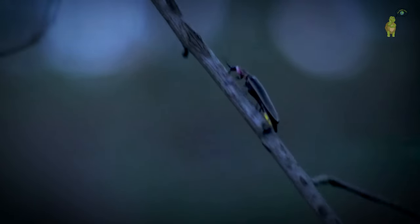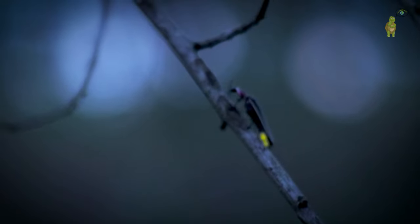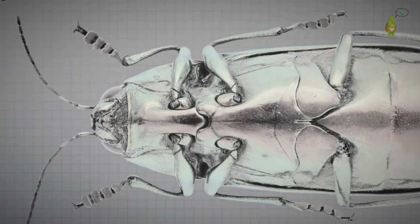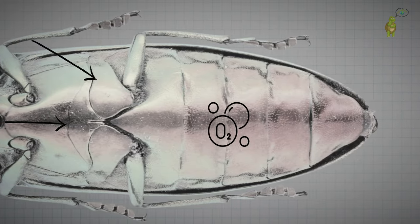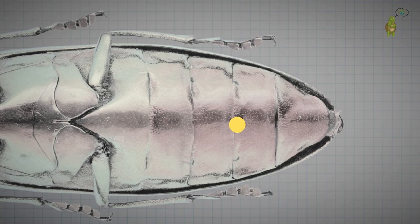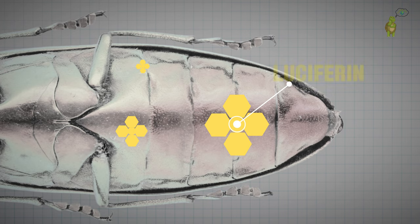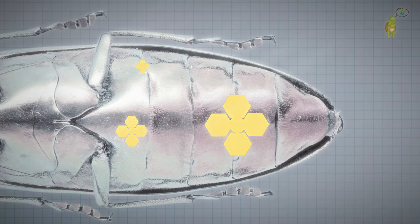Today, we understand that the firefly's bioluminescent reaction unfolds as follows. The firefly directs oxygen to its light cells through its tracheals. Oxygen molecules react with luciferin, catalyzed by luciferase and fueled by energy in the form of ATP. The agitated and excited luciferin, upon returning to its normal state, releases energy in the form of light, creating the captivating fire in fireflies.